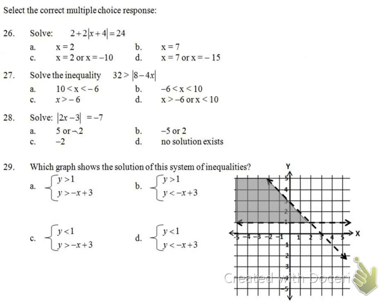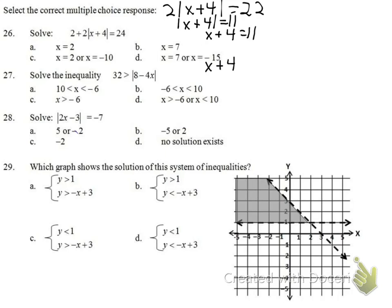Number 26 (multiple choice): isolate the absolute value — subtract 2, divide by 2, giving |x + 4| = 11. So x + 4 = 11 gives x = 7, and x + 4 = -11 gives x = -15. The answer is D: {7, -15}.